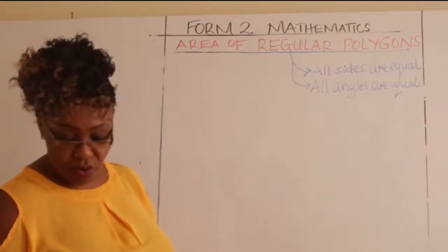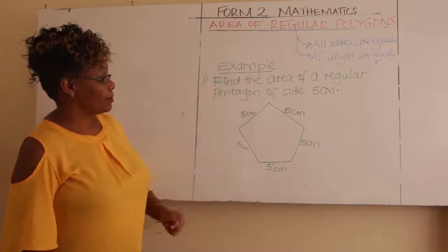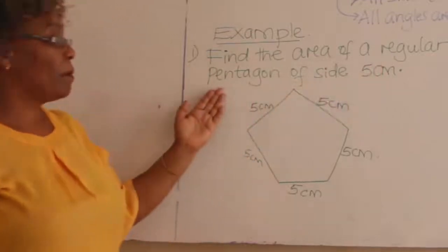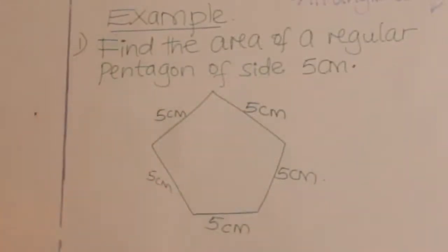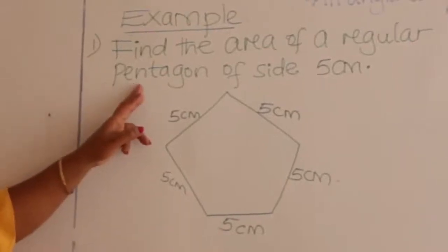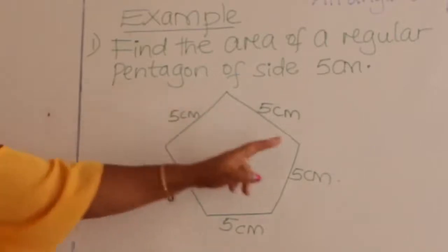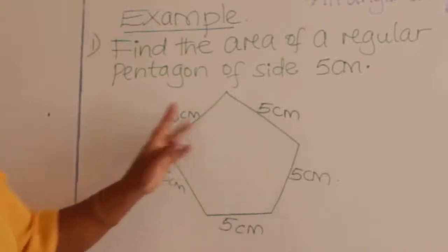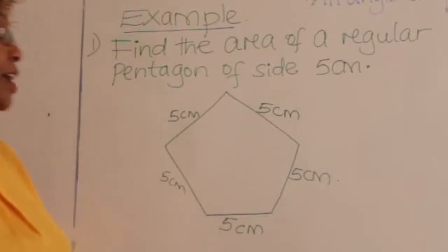So let us look at an example. Number one: find the area of a regular pentagon of side five centimeters. A pentagon has five sides, so it is a five-sided figure — one, two, three, four, five — and every side is five centimeters. How do you find the area of this regular pentagon?